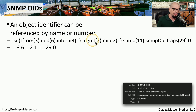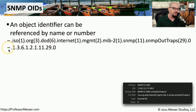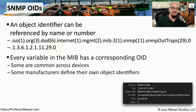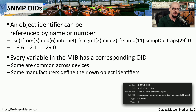You could spell out what each of these particular sections mean by their number, but when you're sending this information across the network, all you're sending is a series of numbers. This means that you could have a very large management information base that contains hundreds or even thousands of OIDs that you could reference. You have to be sure that you're requesting exactly the OID that you need to be able to receive the information back from that device.